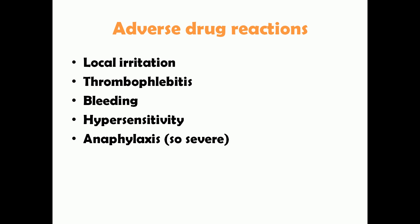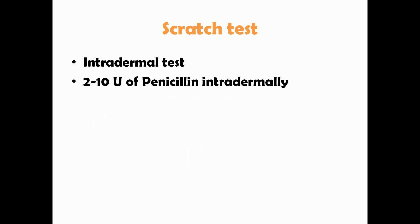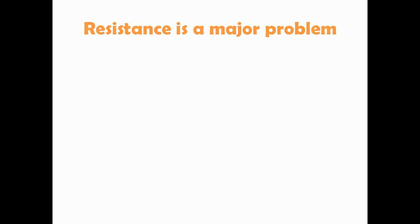Adverse drug reactions to penicillin G range from minimal local irritation at the injection site to severe conditions such as thrombophlebitis, bleeding, hypersensitivity, and anaphylaxis. Anaphylaxis is very rare but can be life-threatening. Before administering penicillin, a scratch test — also known as an intradermal test — is performed by injecting two to ten units intradermally to observe for vital skin reactions such as induration, determining if the patient is allergic to penicillin.